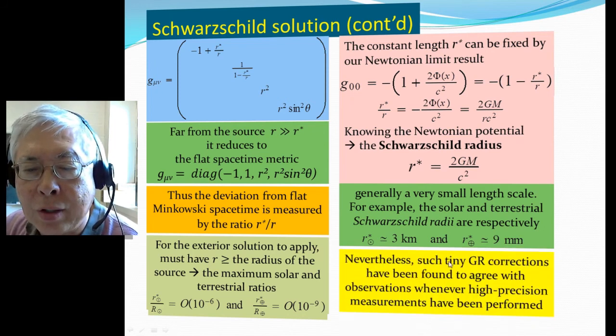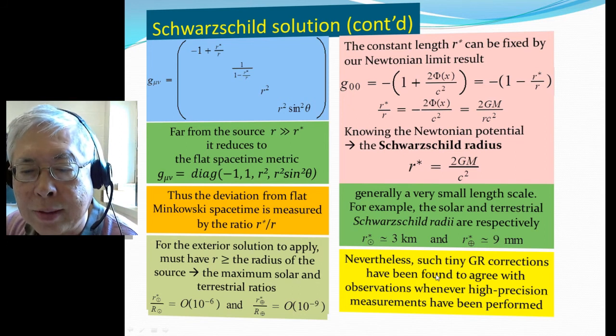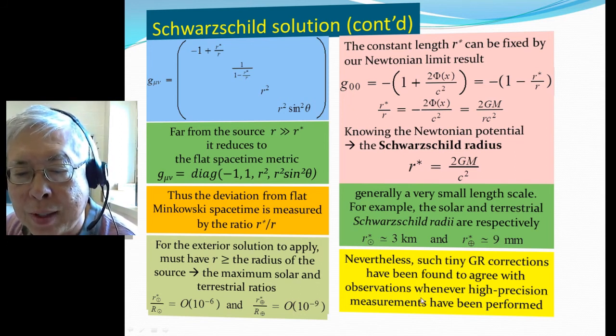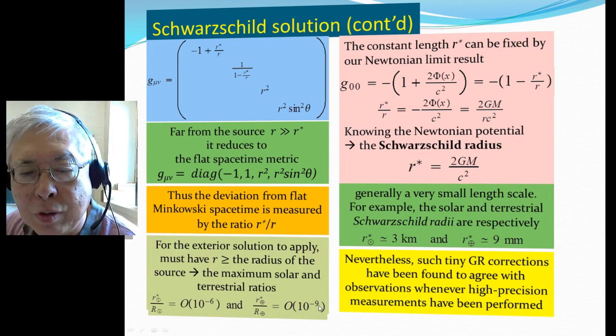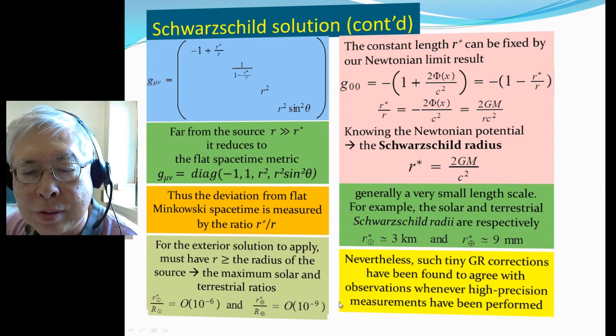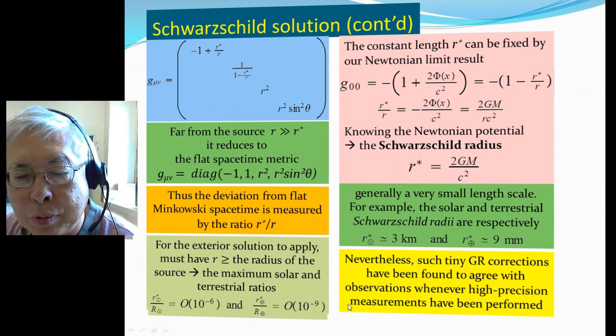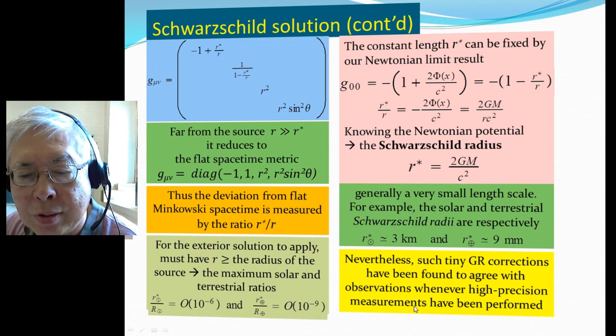Even though such tiny corrections, they still have to be found to agree with observations whenever high precision measurement has to be performed. Even though it's a correction, a GR correction very small in our solar system, we're still able to find experiments where this can be compared.